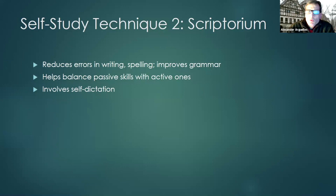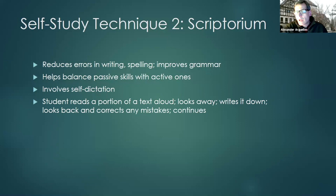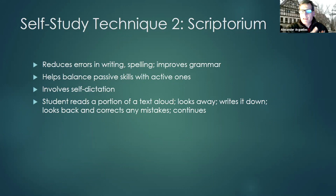What a student does is read a portion of a text aloud — and this is done much better written by hand than typed. You look at a text, look away, and write down what you just read aloud. Then you look back, and if you made any mistakes you correct them immediately. Then you go on.